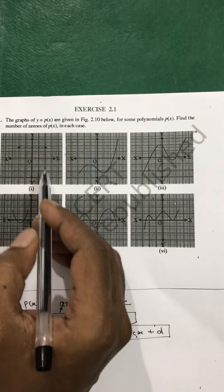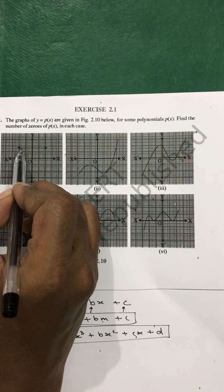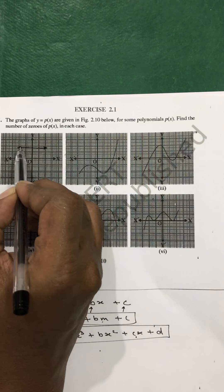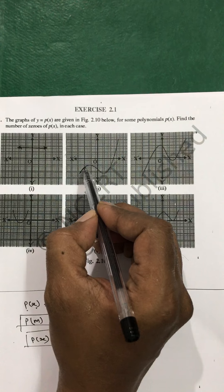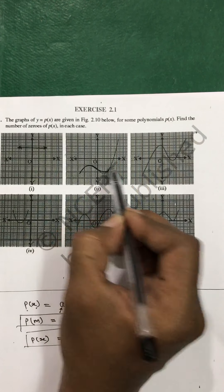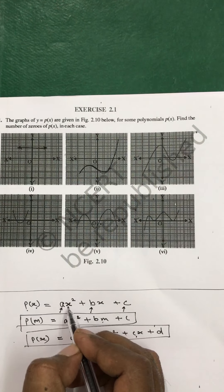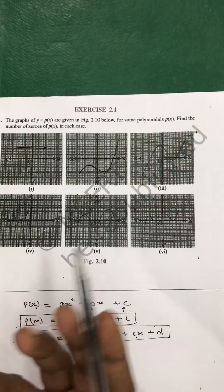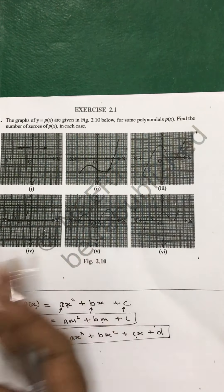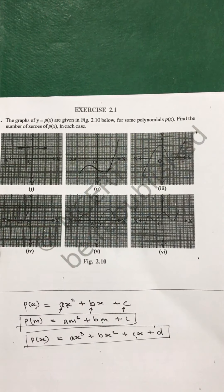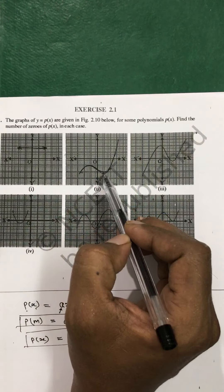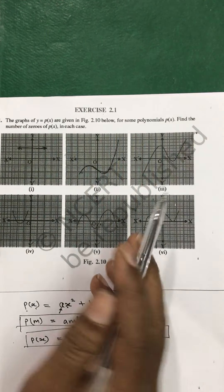Here we are dealing with graphs of y equal to p of x. A graph basically shows any form in which your equation is behaving. If you trace different values of x by substituting them into the equation, you will keep on getting different values of p of x. In that way, you go on tracing these graphs.